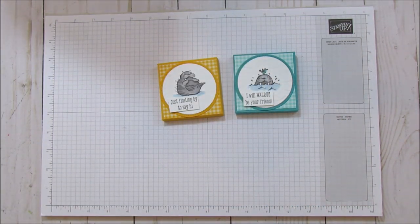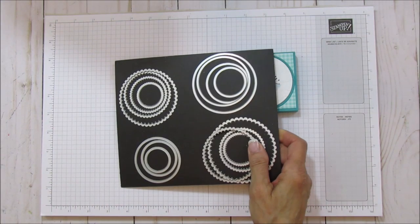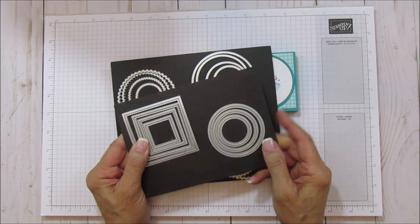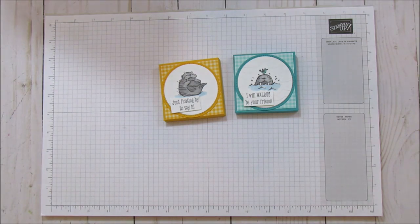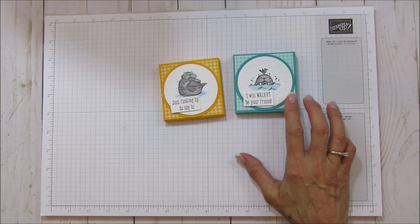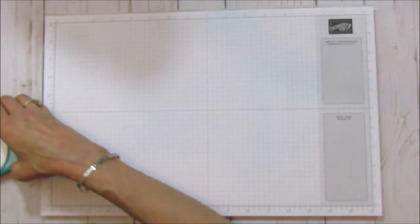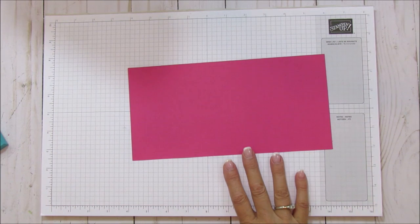All right, so we are going to use also our layering circles and then we're going to use our stitch shapes framelits, and I'm using the largest circle for that. Now you can use if you have a punch or anything like that, you can use that for behind it for your matting, but I love the stitching. It just adds a lot to this box.